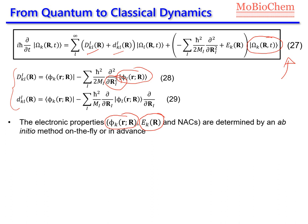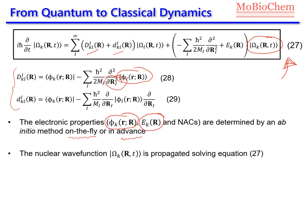In order to solve this equation, we need to compute the non-adiabatic couplings, which depend on the electronic wave functions, and also the electronic energy of state k in general. We can compute the electronic properties by an ab initio method solving the time-independent Schrödinger equation, and we can do that on the fly during the dynamics, or pre-compute them in advance and then solve equation 27 using these pre-computed electronic properties. When we solve equation 27, we say that we are running a quantum dynamics simulation. However, as you can imagine, this is very expensive and is limited to a few degrees of freedom — maybe a maximum of 10 — so we can run quantum dynamics for very small molecules only, perhaps with 3 or 4 atoms.